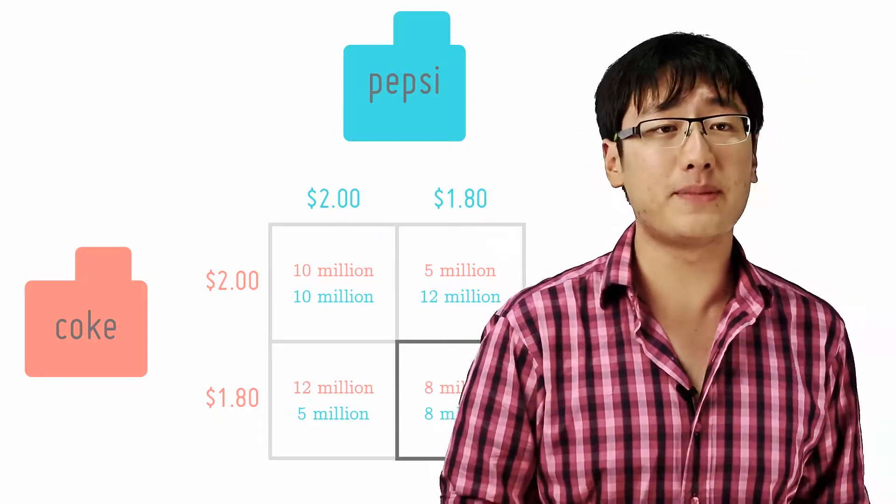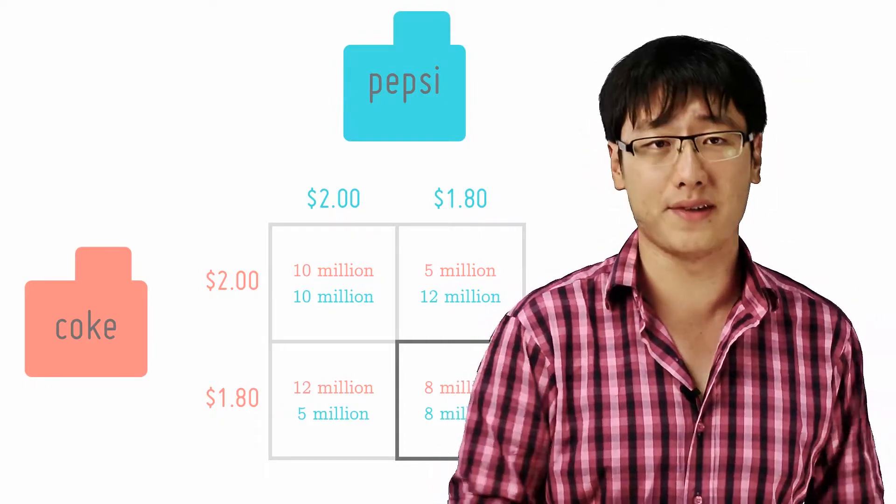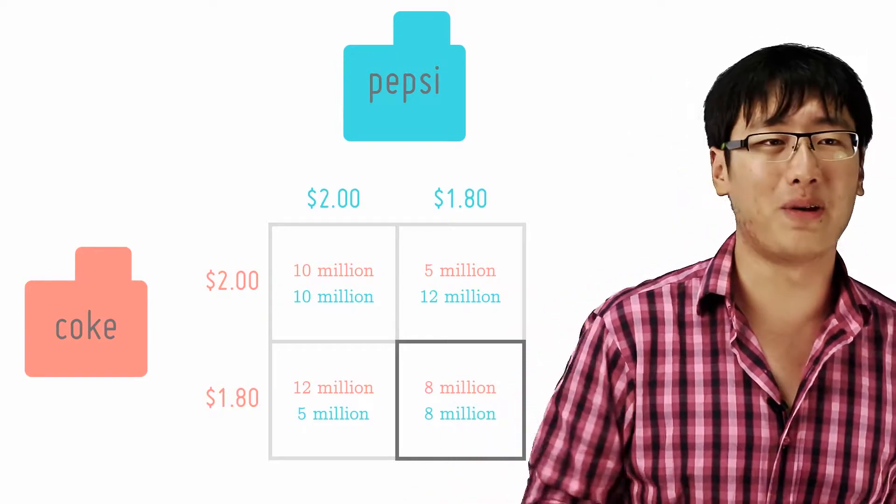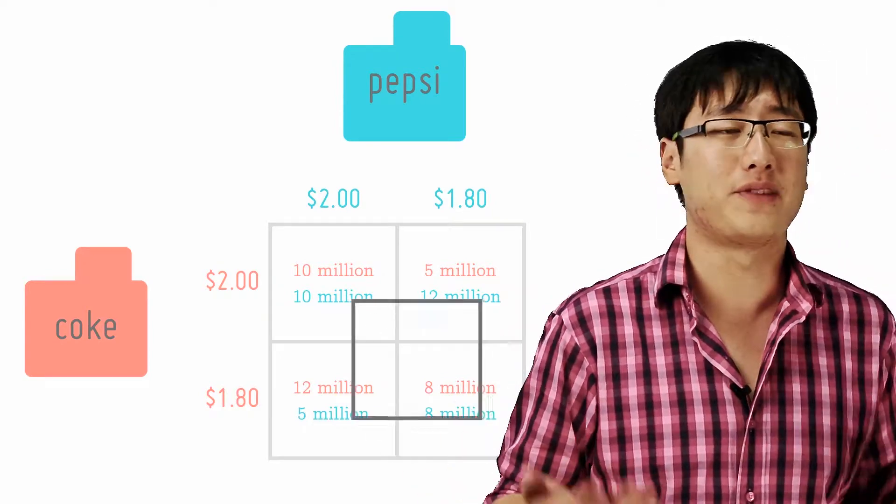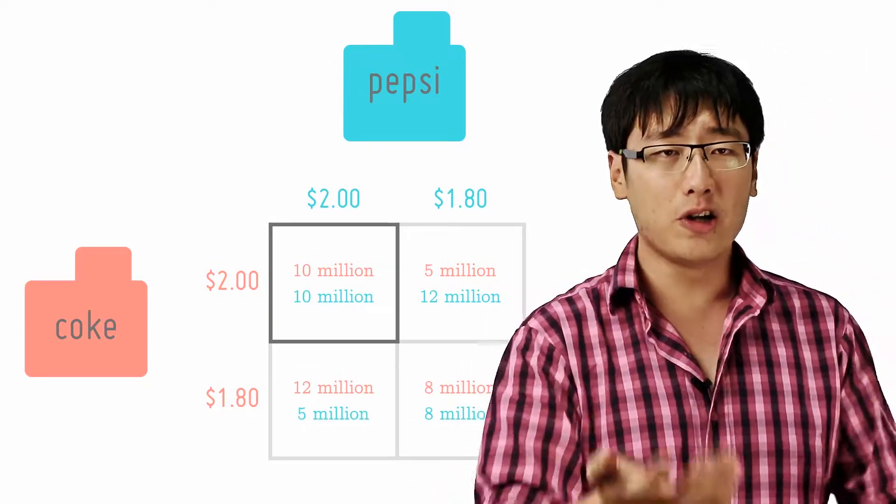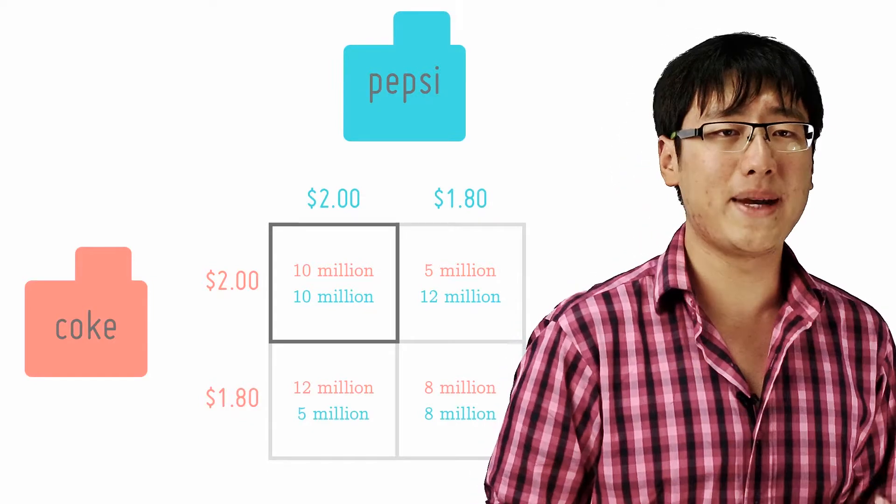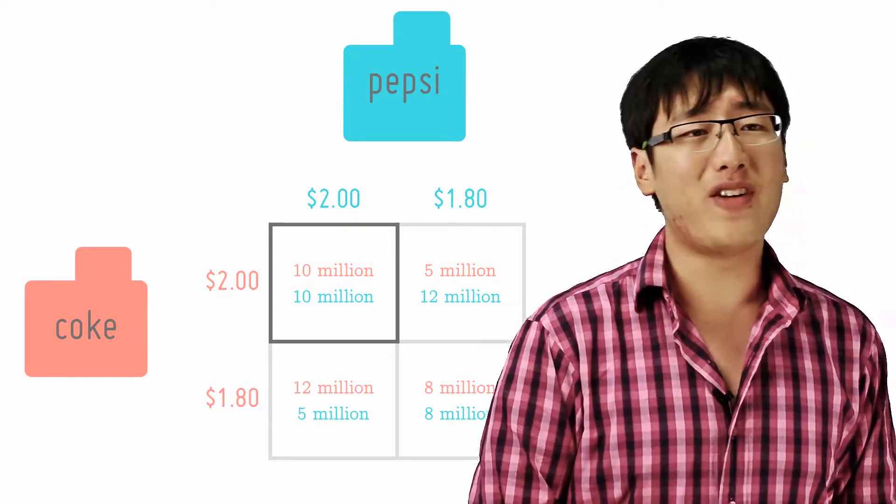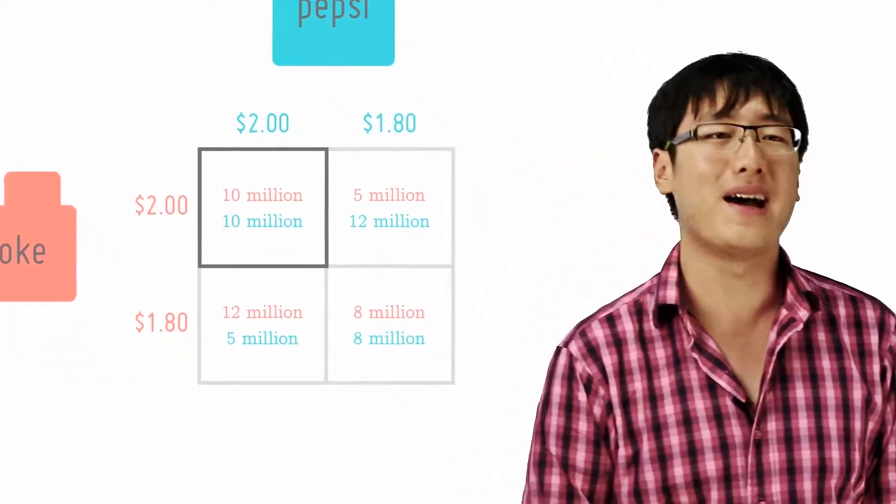In the previous example, both Pepsi and Coke would be tempted to lower their prices and they both end up earning a lower profit of $8 million instead of $10 million. Thus collusion rather than competing with each other would have benefited them both. Yet both would be tempted to cheat and cut prices.